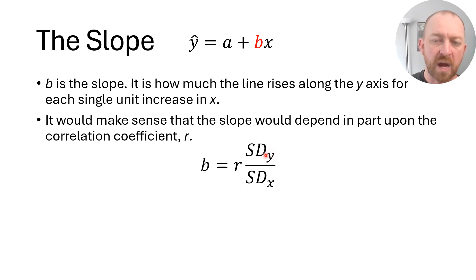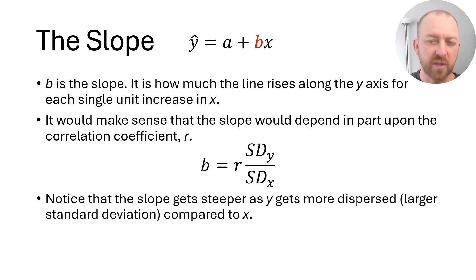You'll notice here that the Y variable is the one in the numerator, not the X variable. That sometimes confuses people because they naturally assume X comes before Y, so X should be on the top. Not in this case, however. And that should make some sense if you think really deeply about this, because essentially what it's saying is as your Y variable gets more dispersed along the Y axis, the B, or the slope, will get steeper. So that makes a lot of sense, and that's exactly why the Y variable goes in the numerator.